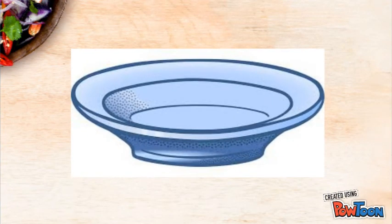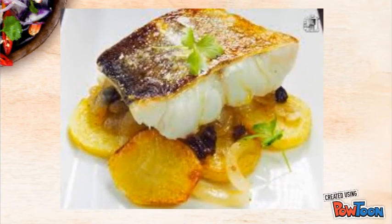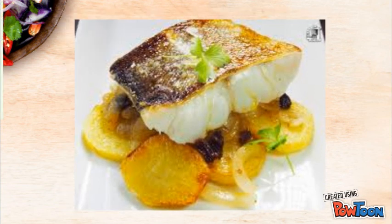Step 6: In a baking dish, we begin mounting the plate. First, place a base with the potatoes. Step 7: On top, put the loins and distribute them. On the sides, add the onion and seasoning.